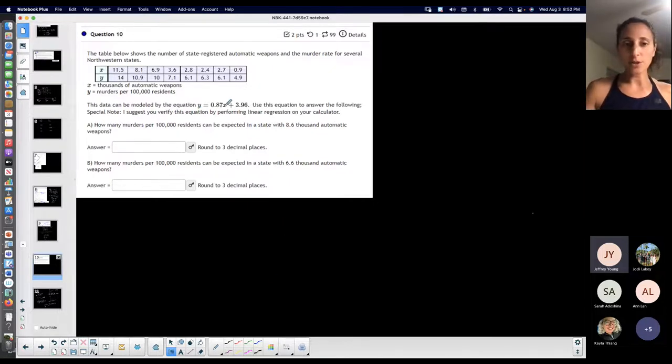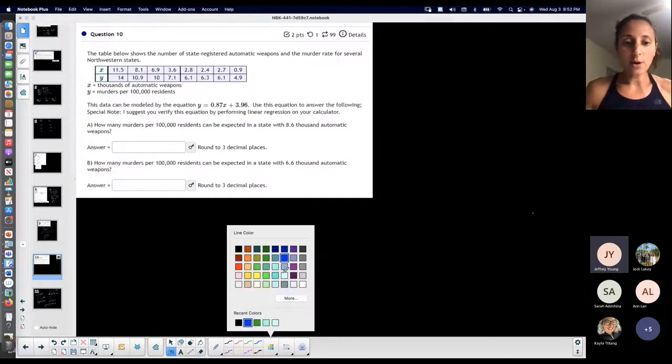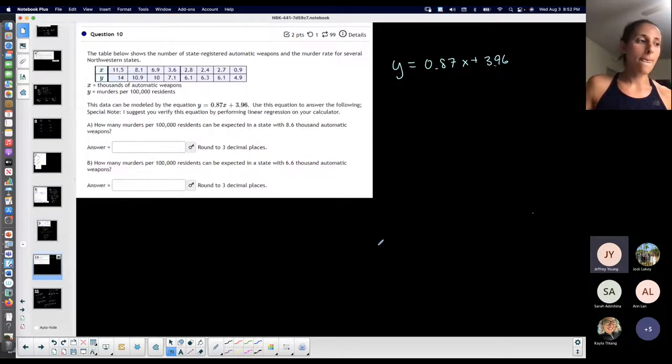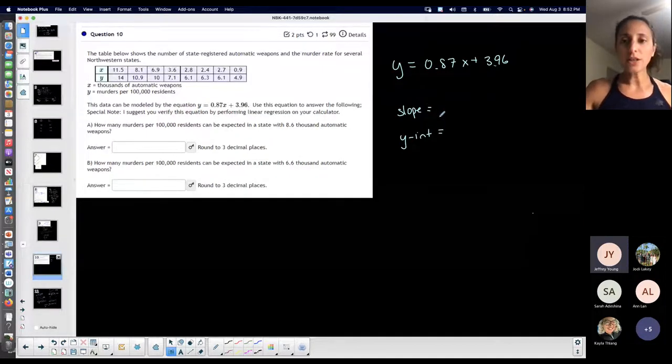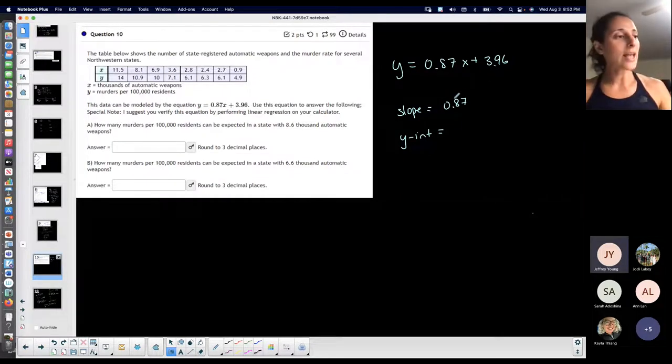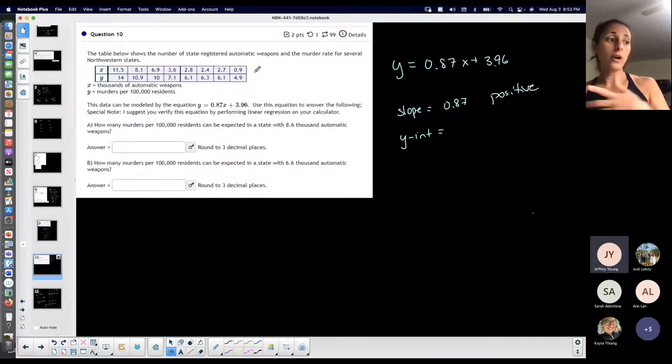This data can be modeled by an equation. The equation is given to me. Now check this out, I want you guys to look at the equation and tell me what the slope is. The slope is 0.87, the coefficient in front of x, and it's positive. What does that mean if the slope is positive? What does that mean about the graph?